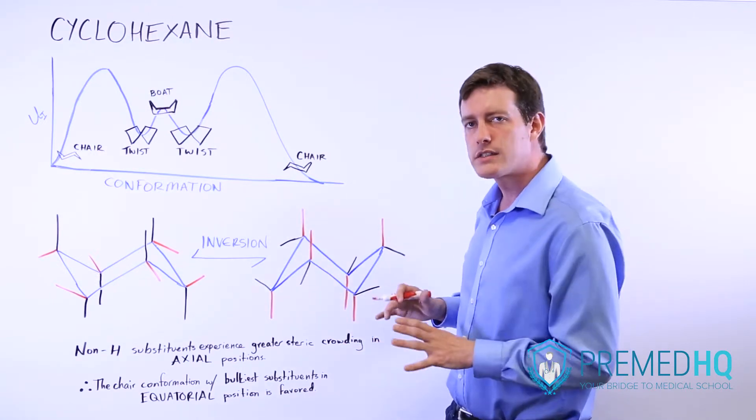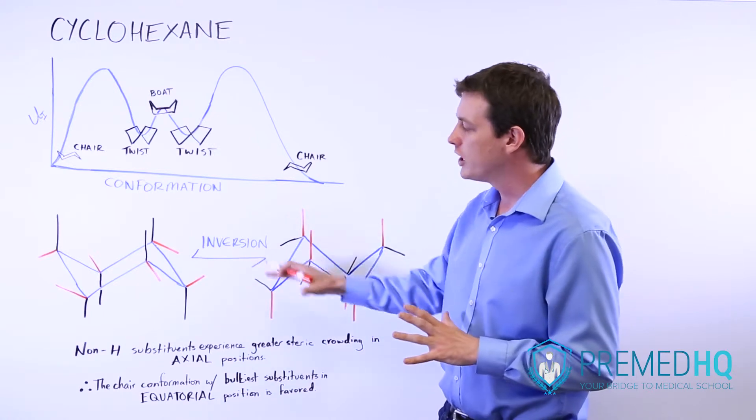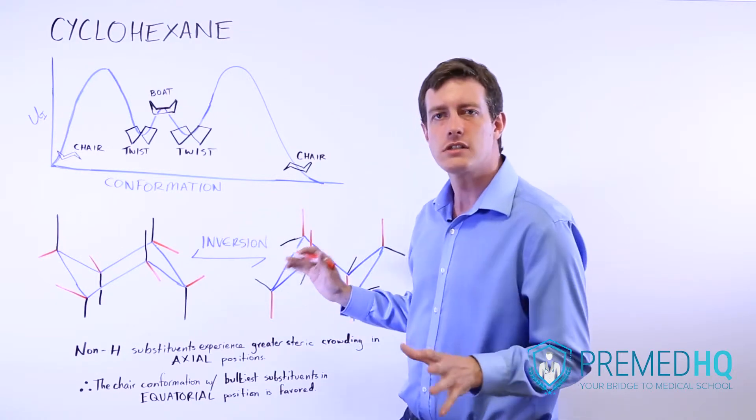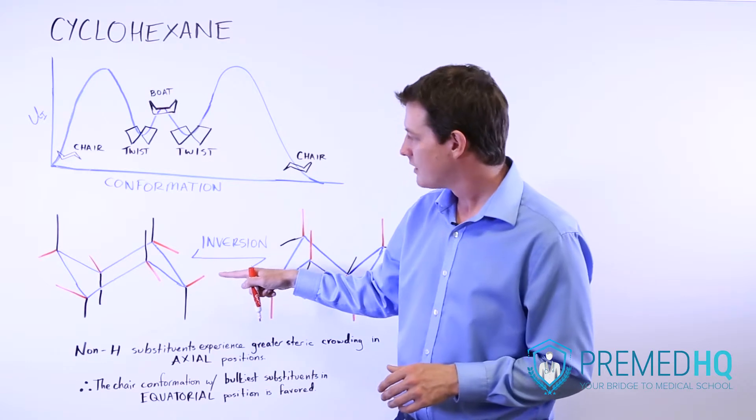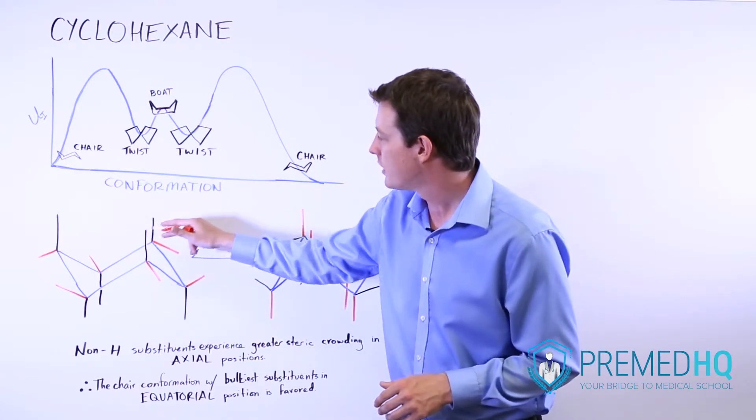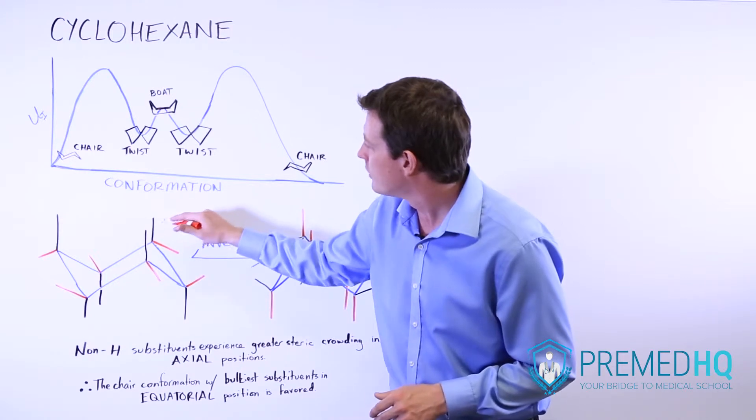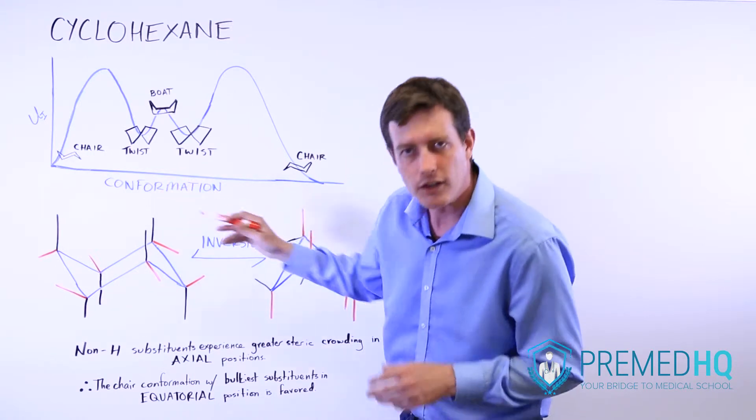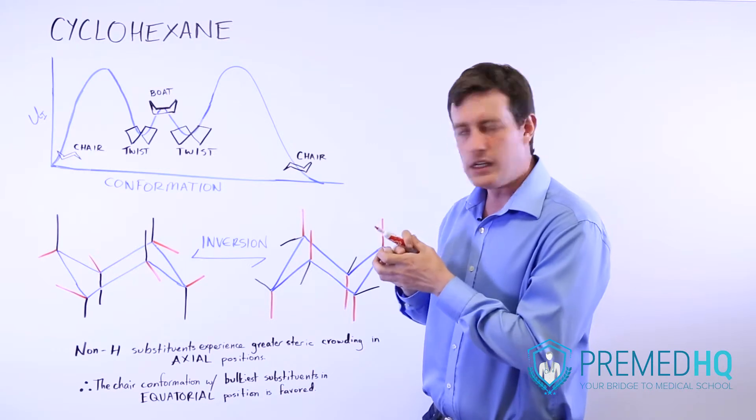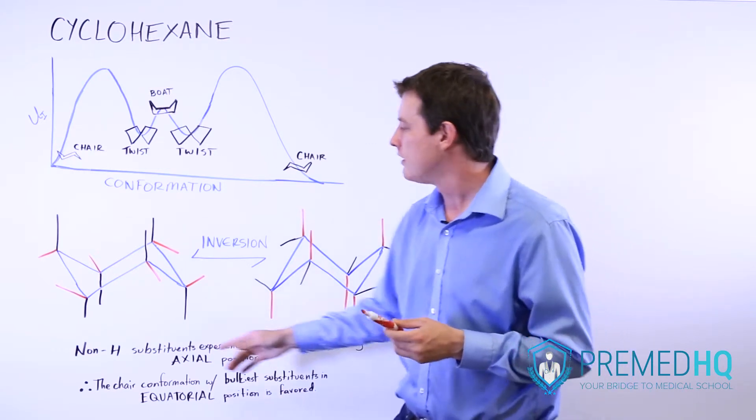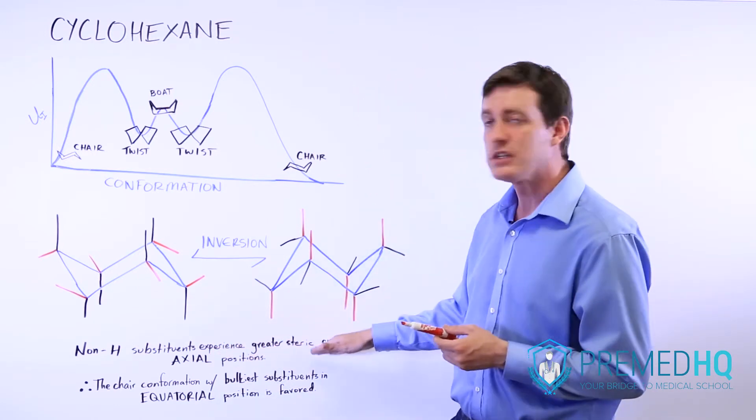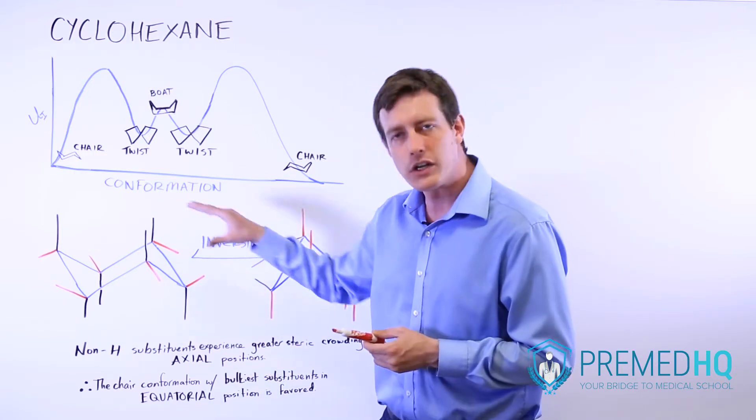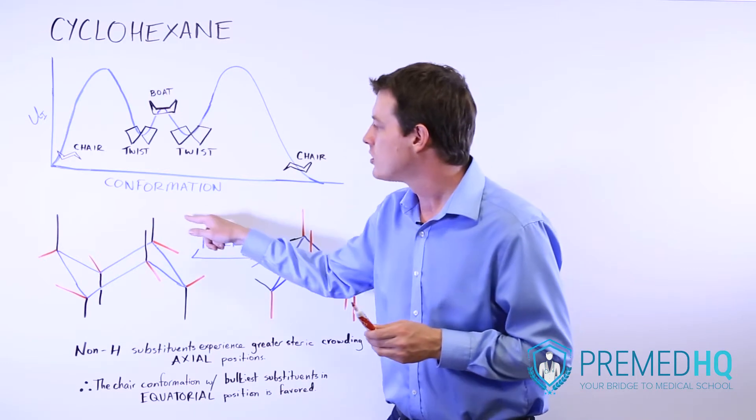And this is very important because the most stable form within the chair conformation is when you have very large or non-hydrogen substituents occupying equatorial positions. Notice, for example, that if you had two large things, perhaps a tert-butyl group, that this would be very hindered if you had one here and one here. They would be likely to encounter each other and be crowded for space. And so the general rule is that non-hydrogen substituents experience far greater steric hindrance or steric crowding when they're in axial positions. So it's a far more cluttered and hindered position if your large substituents are axial.